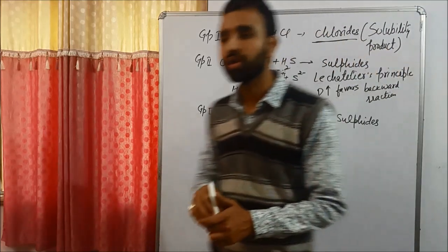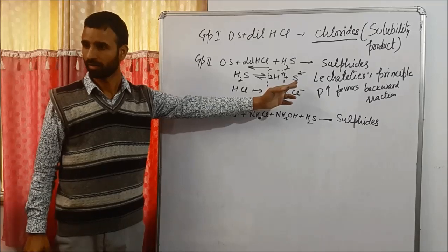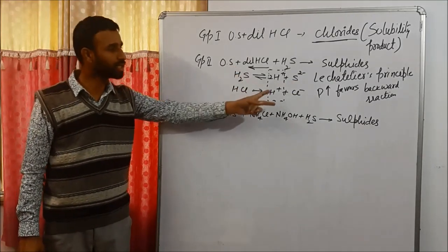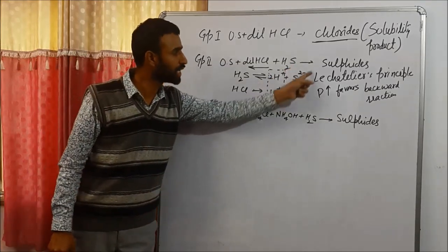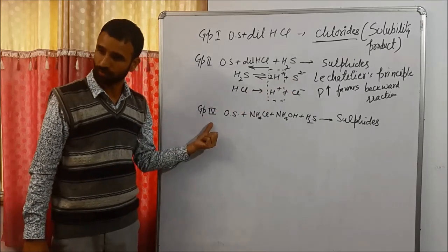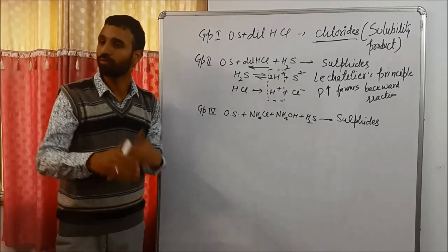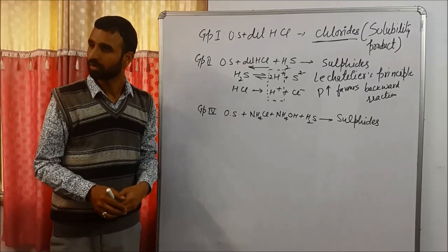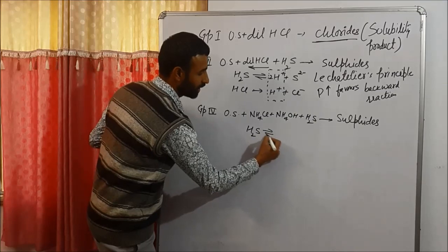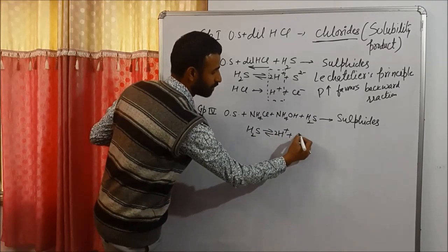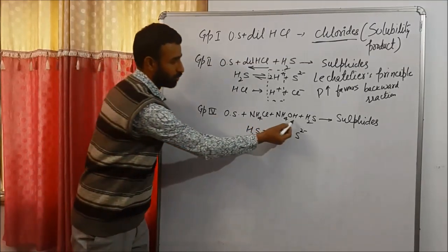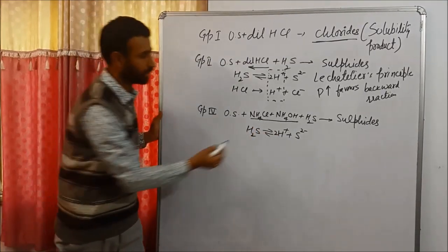This means a low concentration of sulfide is required to precipitate group 2. In acidic medium, we get less concentration of sulfide. But in case of group 4, more sulfide ions are required. So again, H₂S gives H⁺ and sulfide ions; ammonium chloride and ammonium hydroxide are also added.